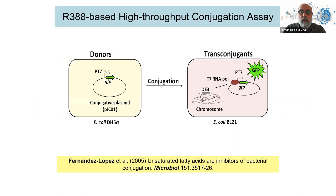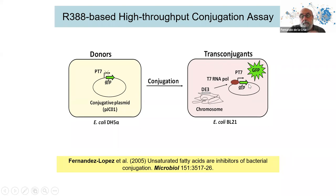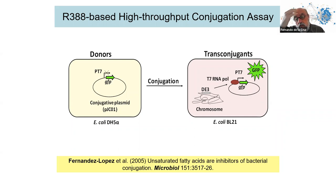Besides plating, we can do a high-throughput conjugation assay using a fluorescent protein. Donors contain a green fluorescent protein under a T7 promoter, which is not expressed in the donor. When the plasmid goes to a recipient like E. coli BL21, which contains the T7 polymerase in its chromosome, you see light — and that light is proportional to the conjugation frequency.